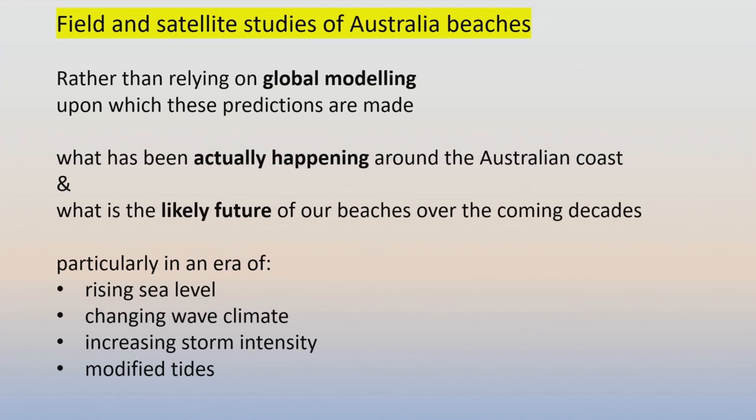Rather than relying on global modelling using simplistic rules and a range of scenarios, we thought it was better to look at what's actually been happening around the Australian coast and what's likely to happen in coming decades — in an era of not just rising sea level, which is just one factor. We also have changing wave climate, increasing storm intensity — the 2016 storm has been suggested as an indication of the type of storms we might get more of — and tides will also be modified as the configuration of the shelf and shorelines changes.